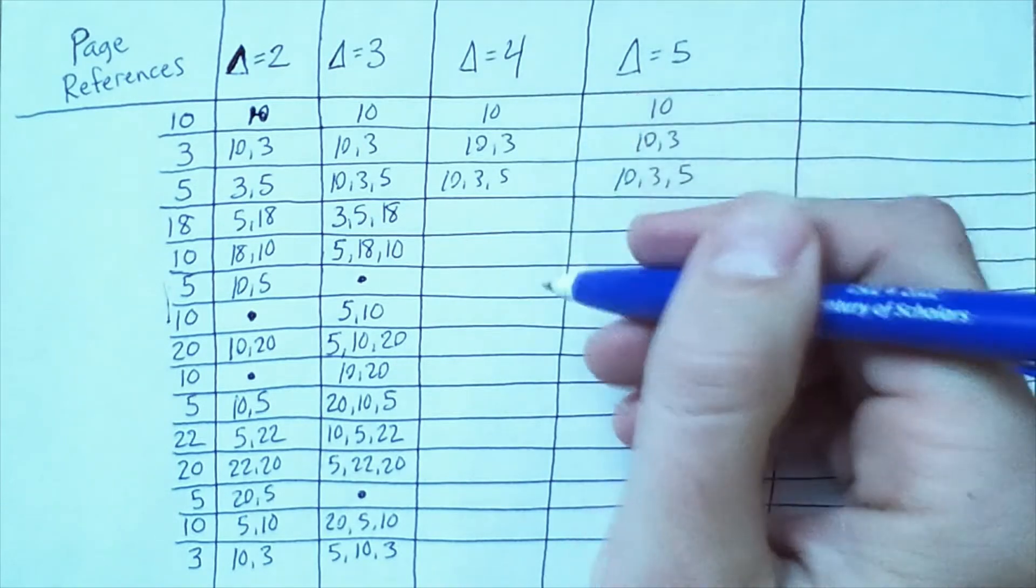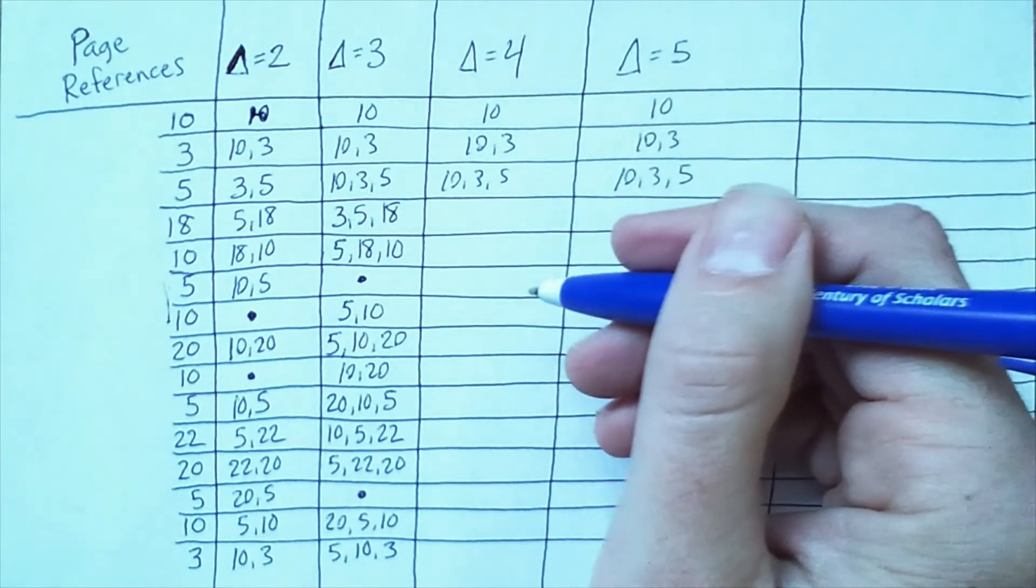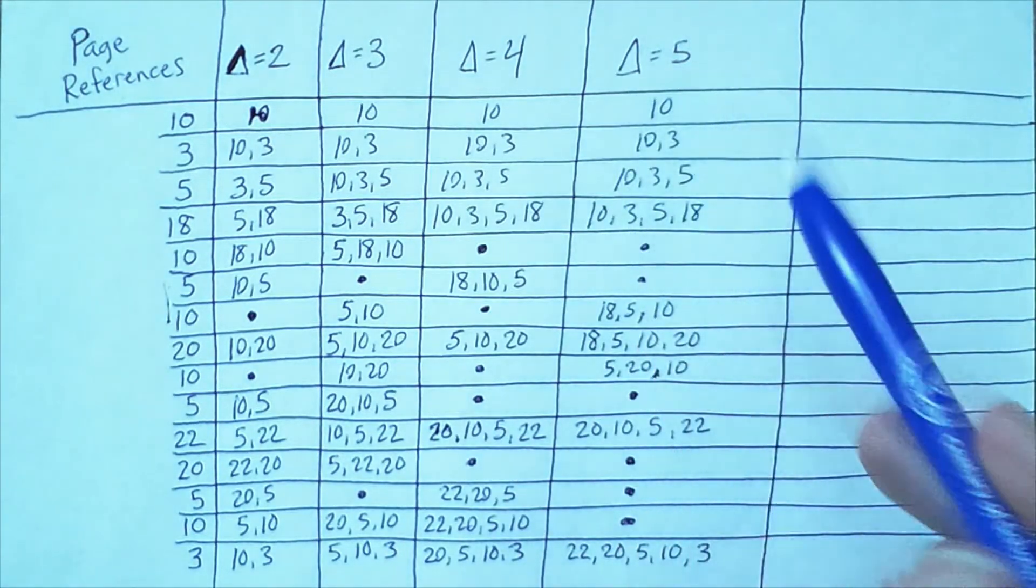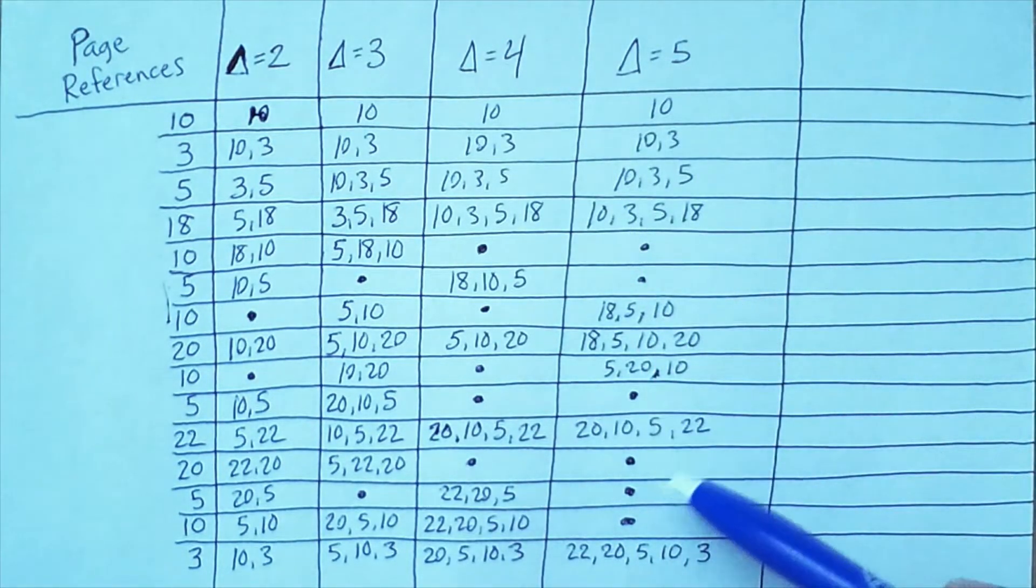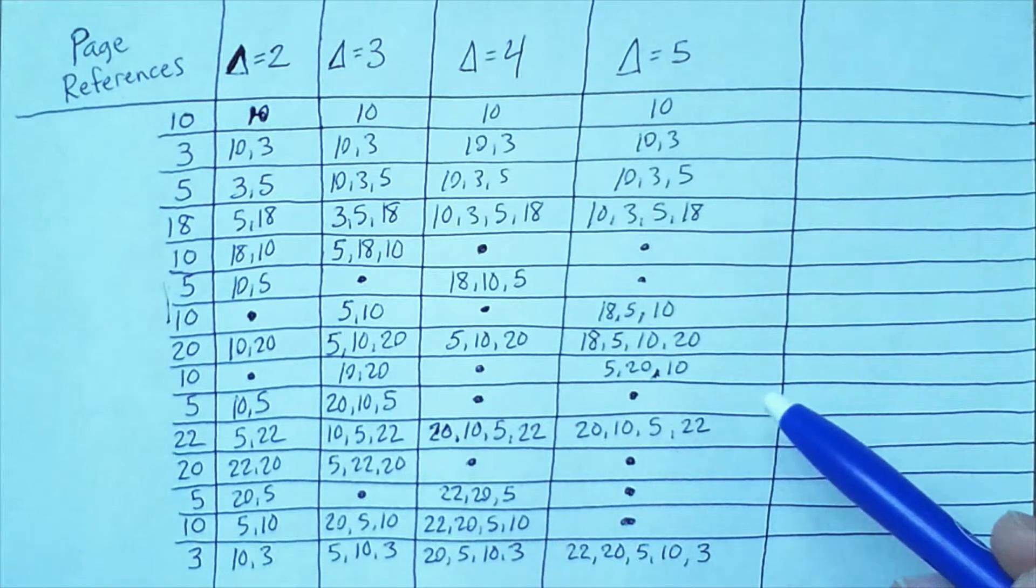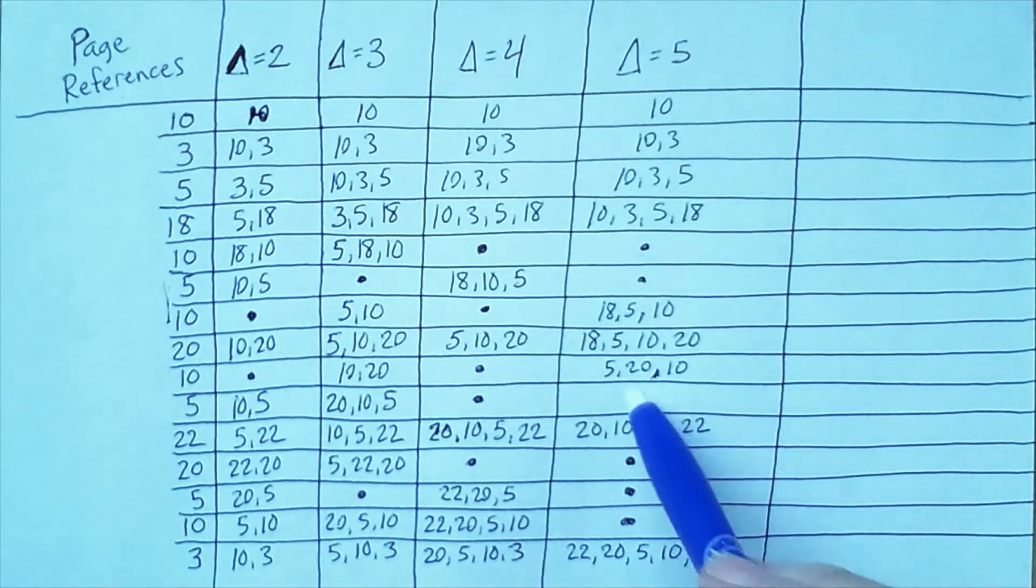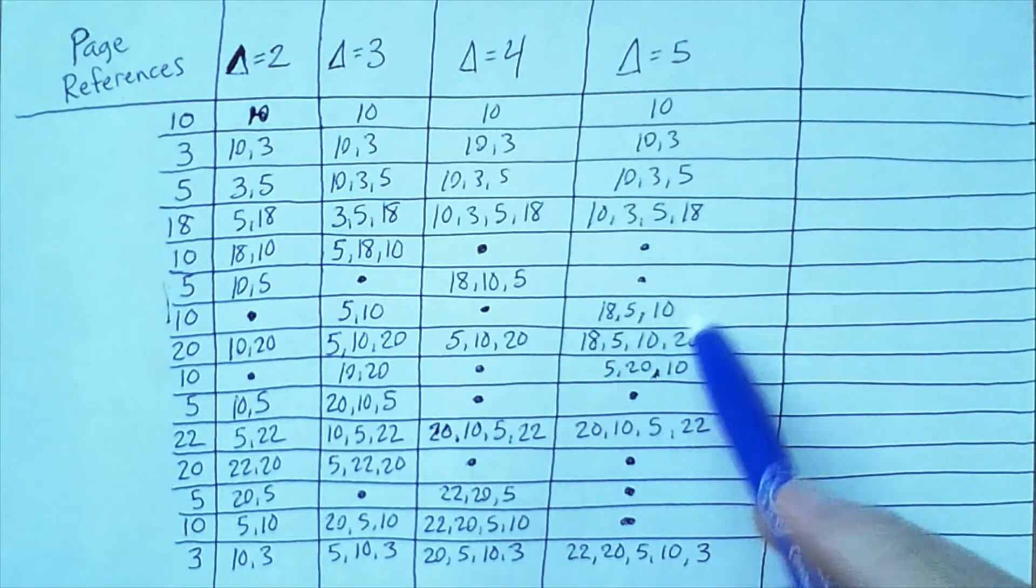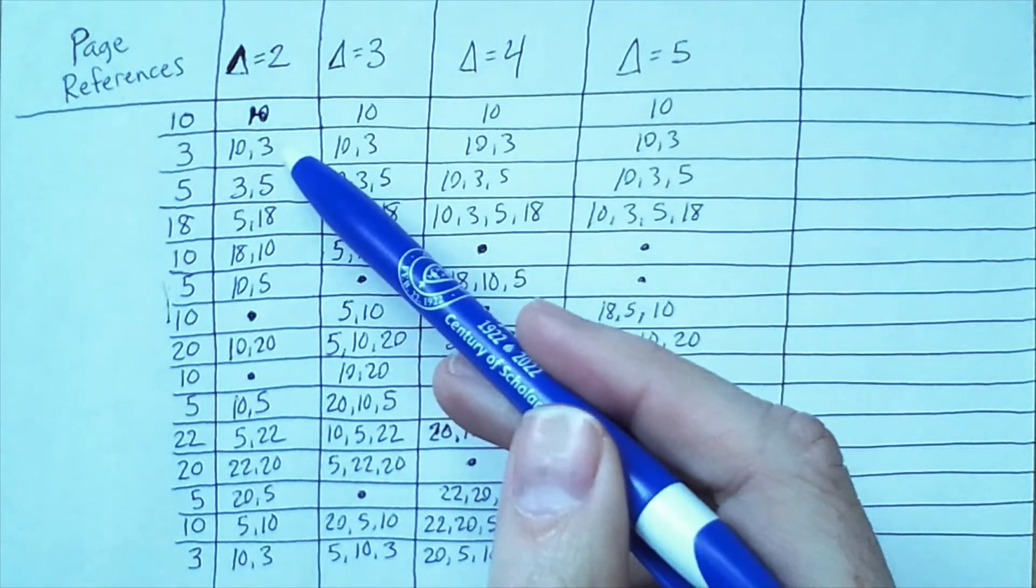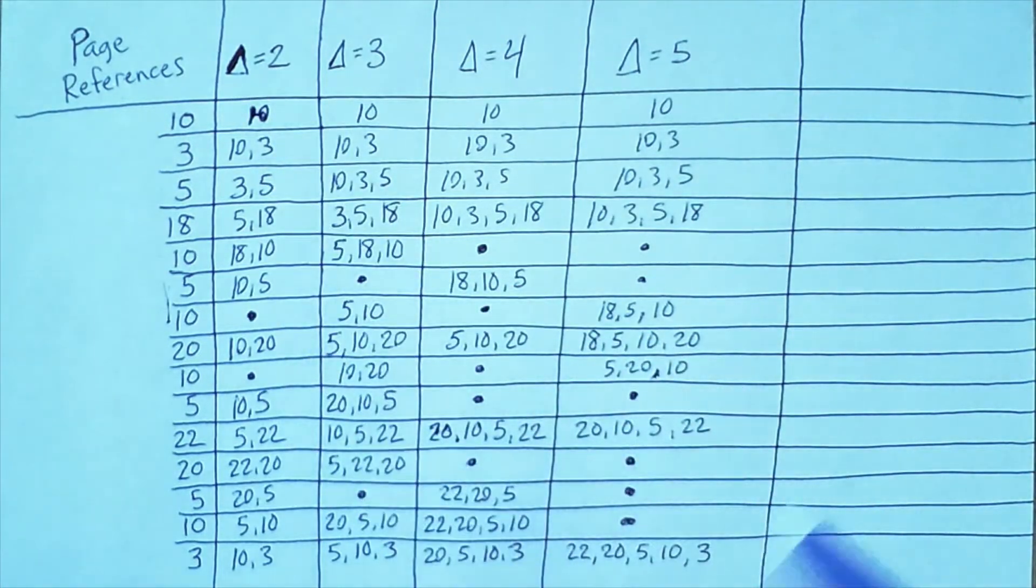Here 3, 5 is a strict subset of 10, 3, 5, and it's always the case that a column on to the left will be a subset of a column to the right of it. So let's add values to this column until something interesting happens.